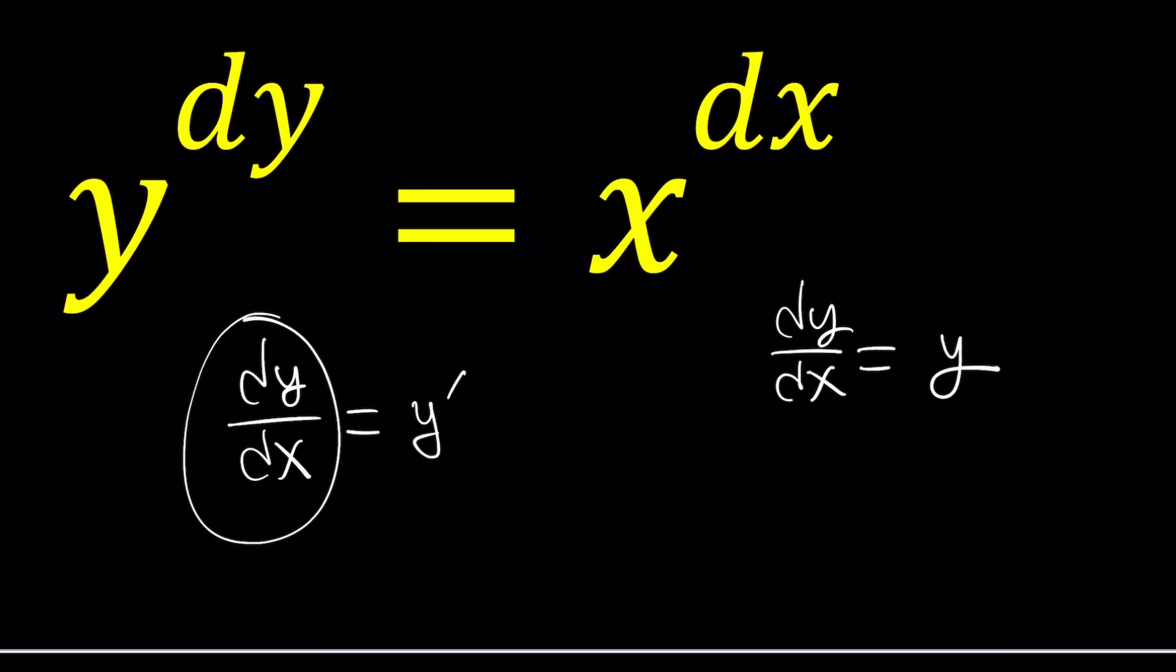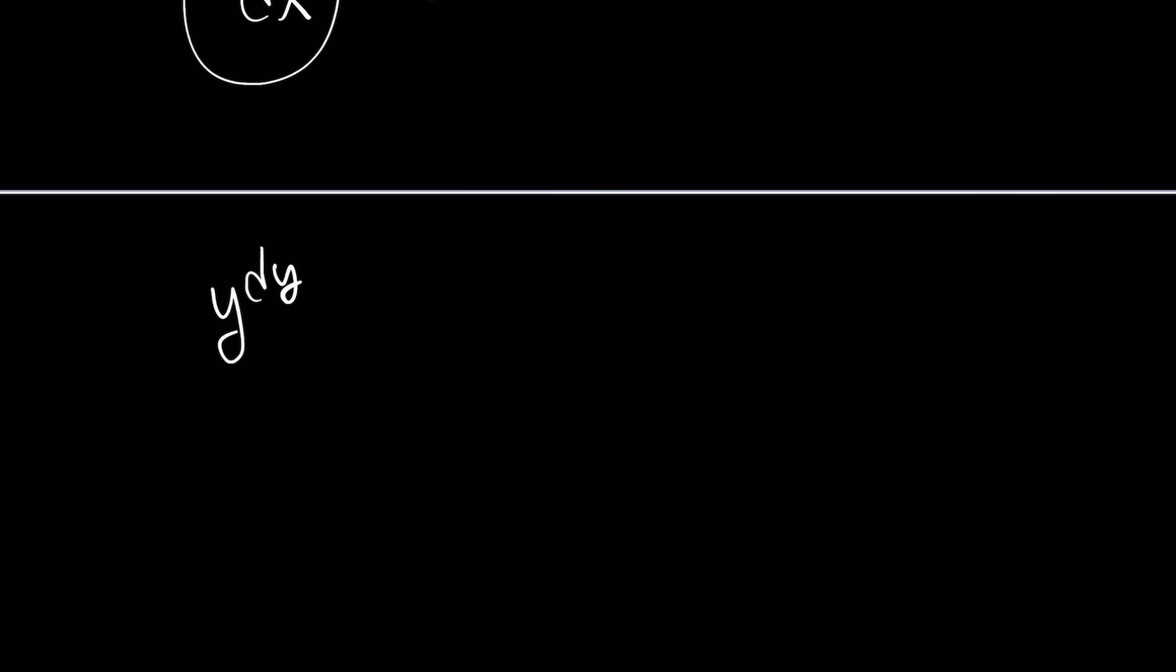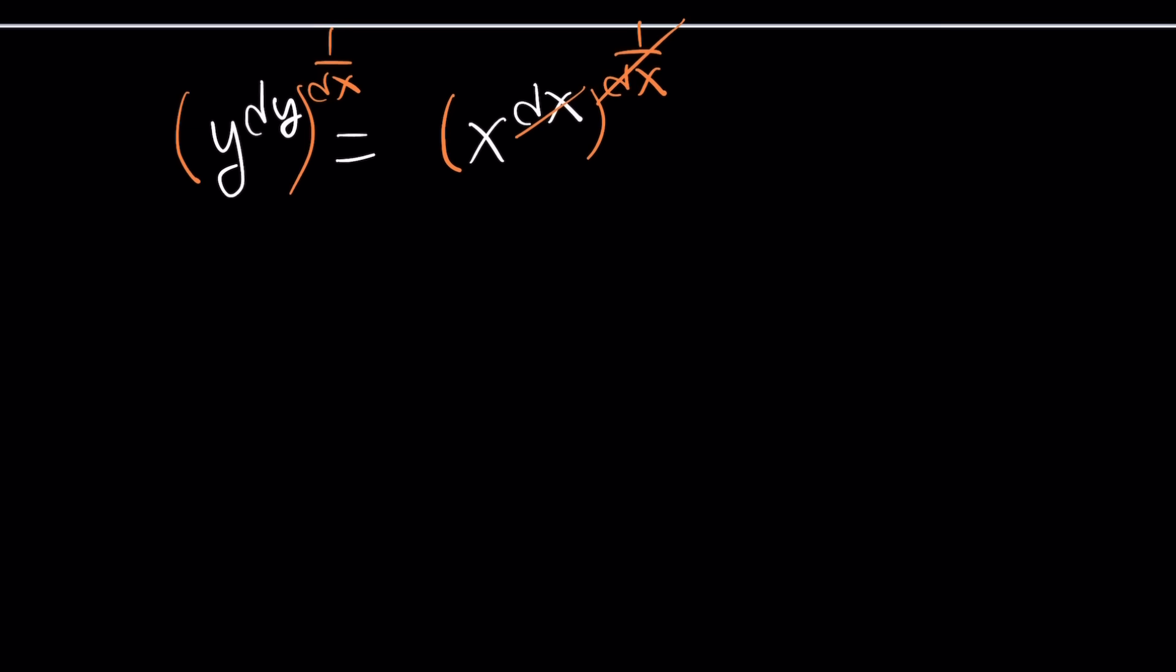I can do this in a couple different ways. We can raise both sides to the power 1 over dx whatever that means. And dx and 1 over dx are reciprocals so their product is always 1. We don't care even if they are infinitesimals or operators whatever it doesn't matter. Here dy times 1/dx just like a fraction becomes dy/dx and this becomes x.